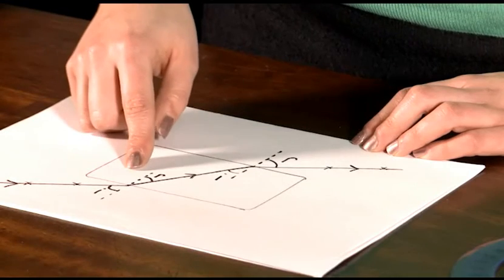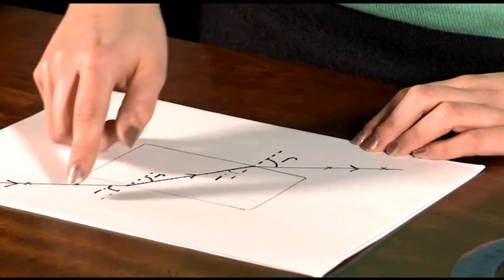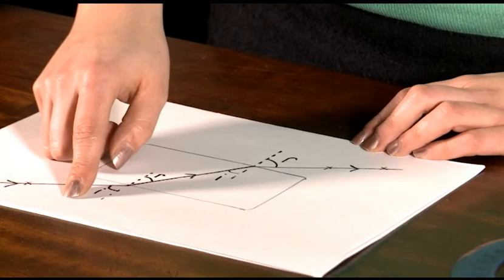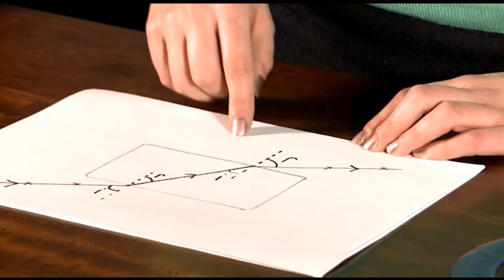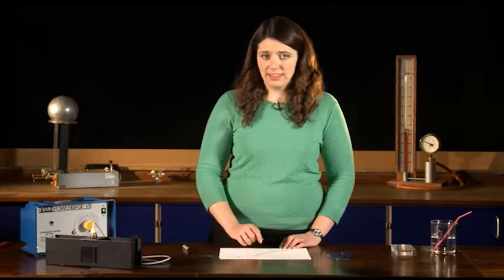So, in refraction, when light travels from a less to a more dense region, it slows down. The angle of refraction is smaller than the angle of incidence. And when it travels from a dense to a less dense region, it speeds up, and the angle of refraction is bigger than the angle of incidence.